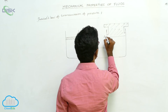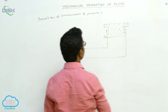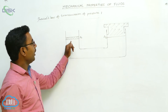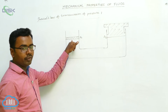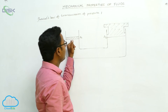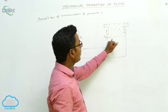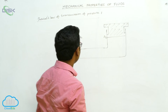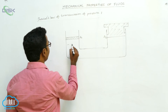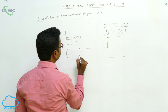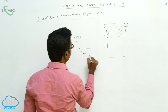The piston fitted with this cylinder has area A2, and the other piston is fitted with the smaller cylinder. The container is filled with a liquid or fluid.